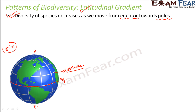Longitude is a similar concept — it represents the angular distance of a place east or west of the standard meridian. Just as the equator is the central reference for latitude, the standard meridian is the central vertical reference line, and the longitudes extend to its east and west.